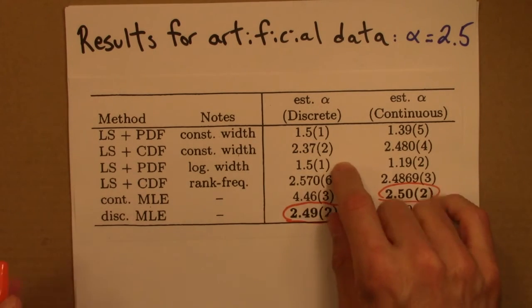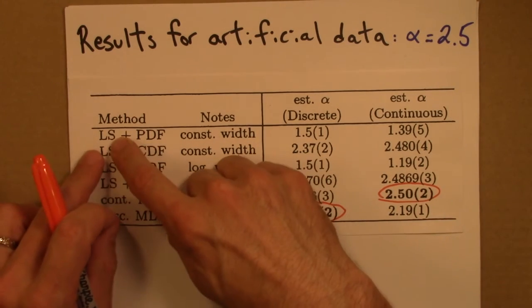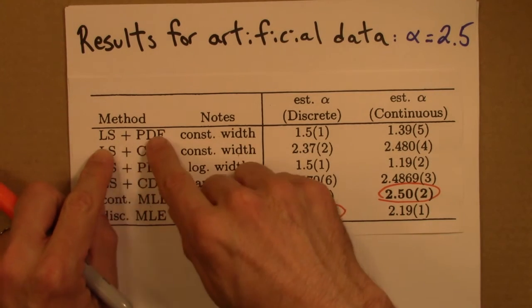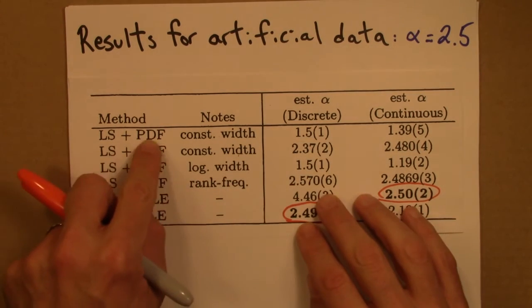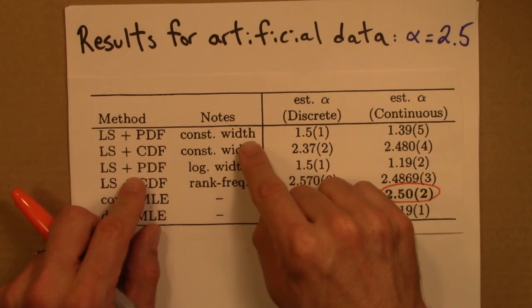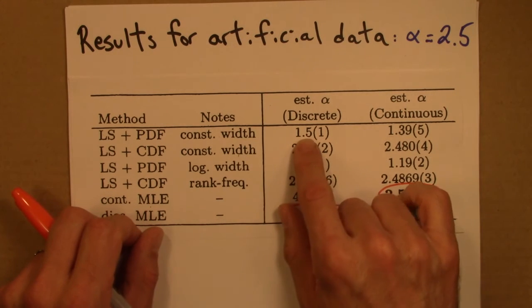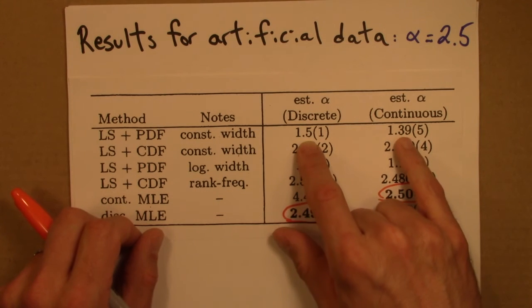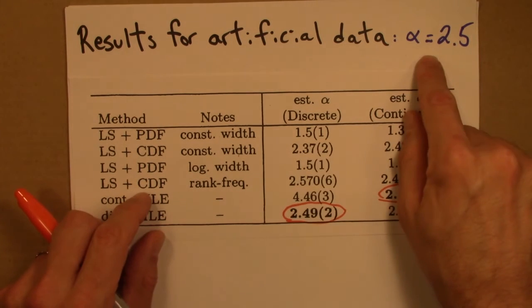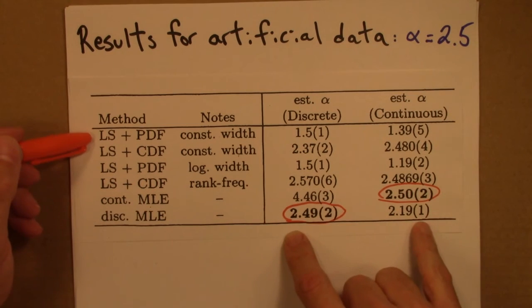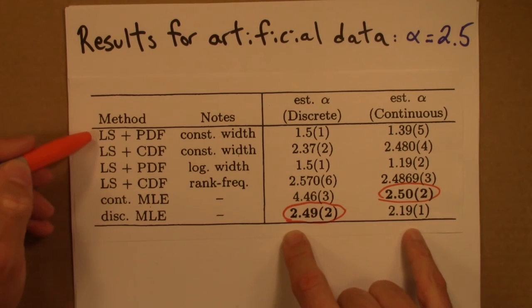Now let's look at some of these other methods. So LS, that's an abbreviation for least squares, the standard approach to fitting a line to data. So if we do least squares with the probability density function, lowercase p of x, with standard width, constant width histograms, one gets, depending on the discrete or continuous case, 1.5 or about 1.4, which is a dreadful result because the true value is 2.5. By the way, there are a lot of papers that do exactly this. So those papers should certainly be treated skeptically.